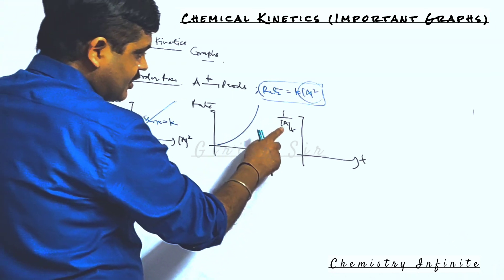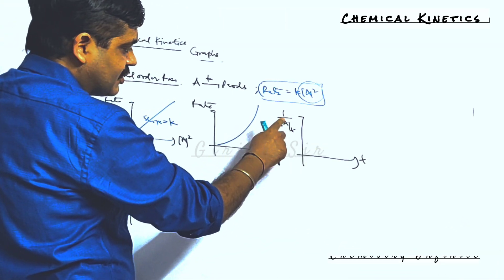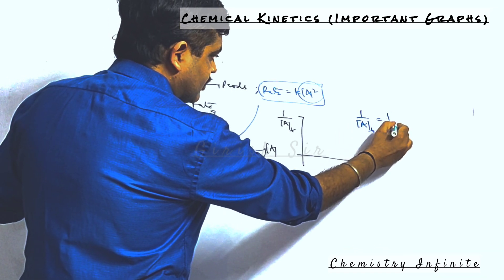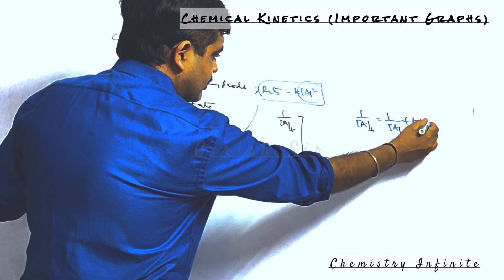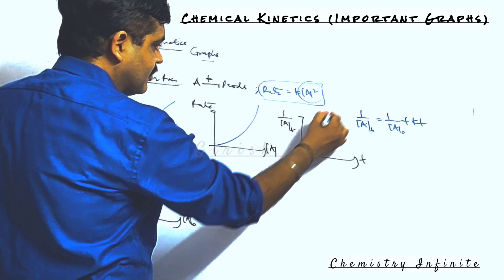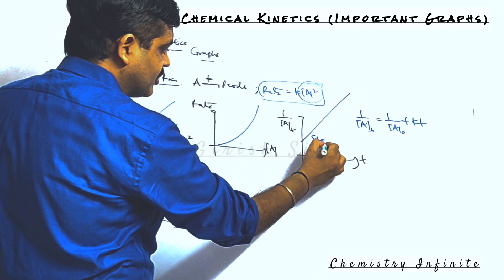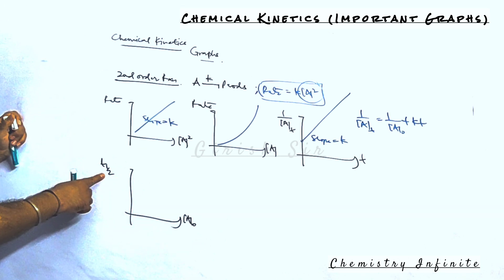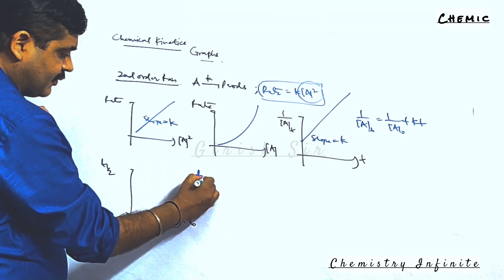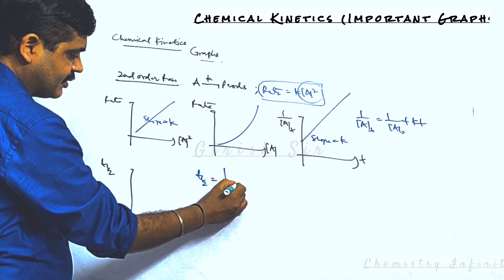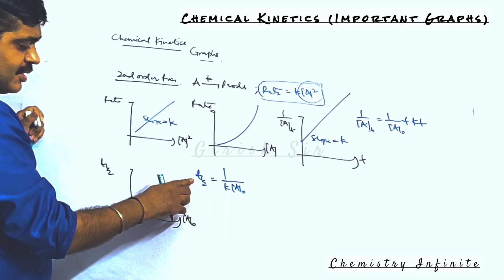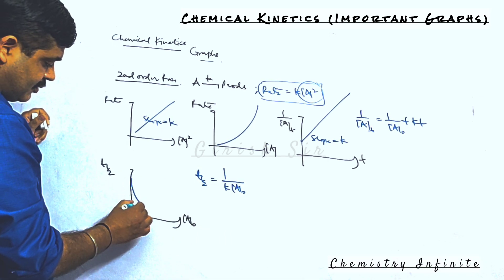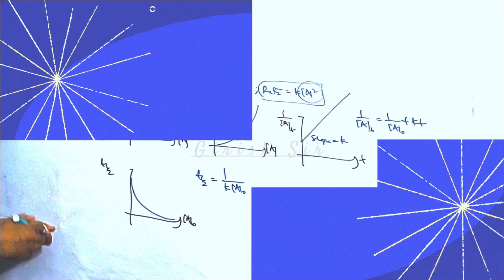The next graph is 1/[A] versus time, where [A] is the concentration of the reactant. Using the integrated rate law, the graph is linear with a slope equal to k. Next is the half-life for a second-order reaction: the half-life depends inversely on A₀, and this is how the graph looks.